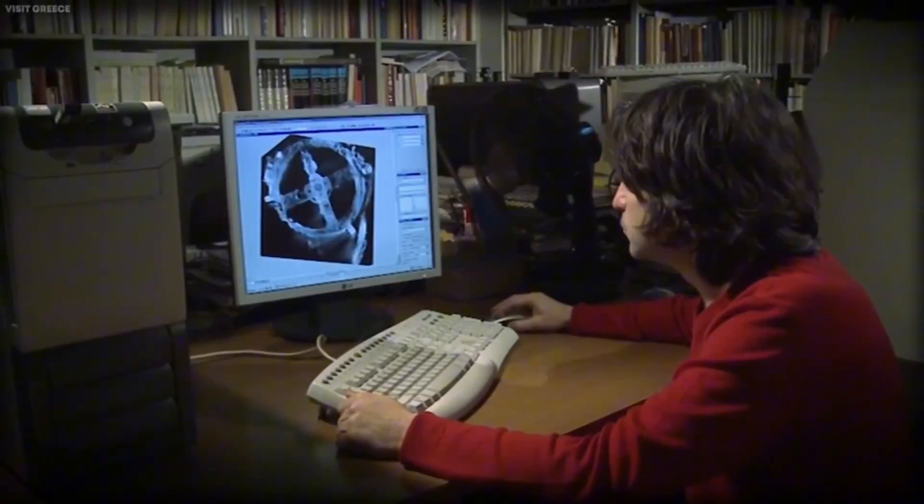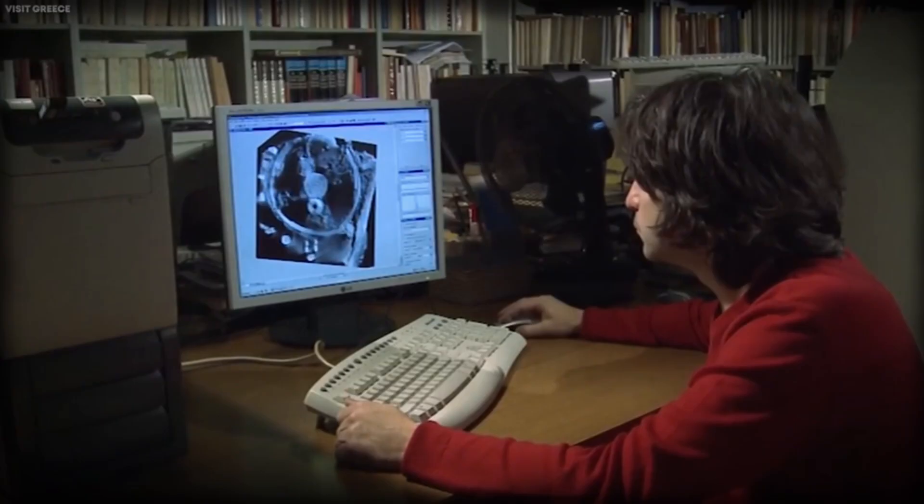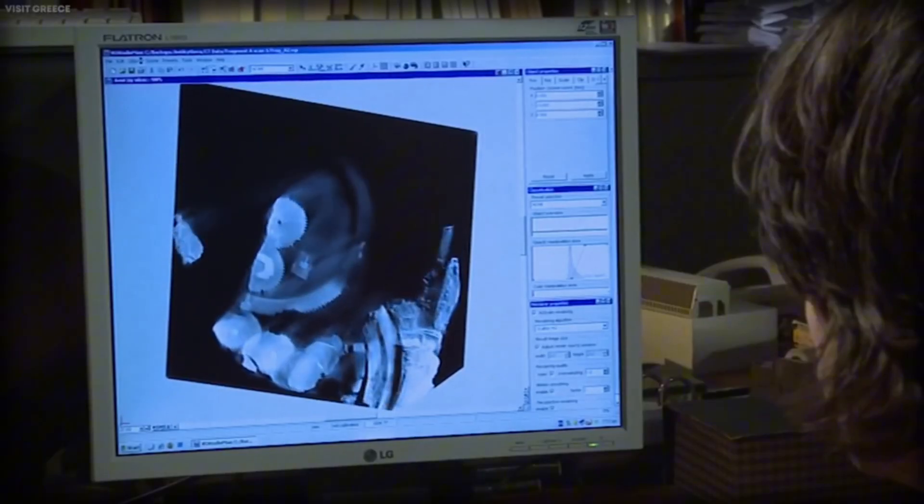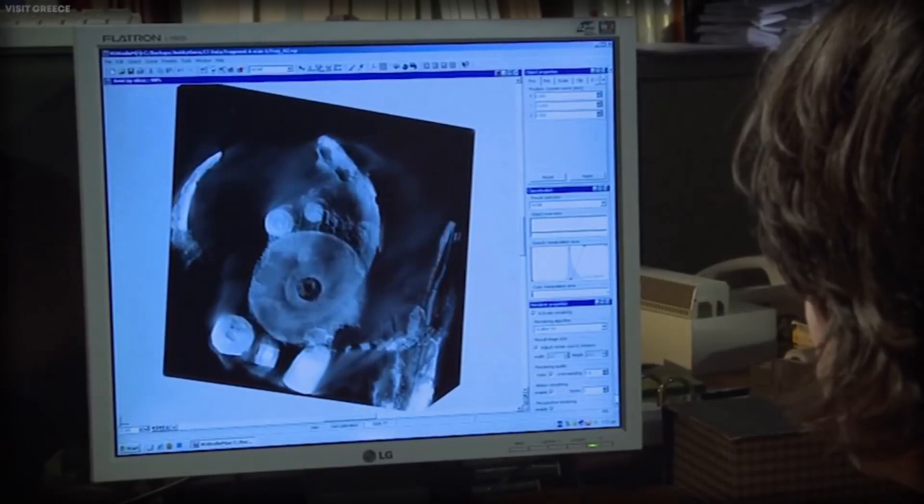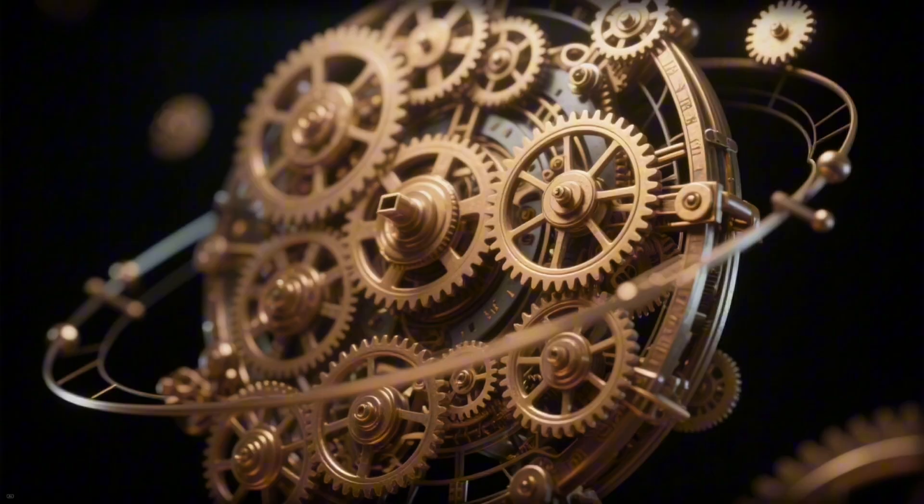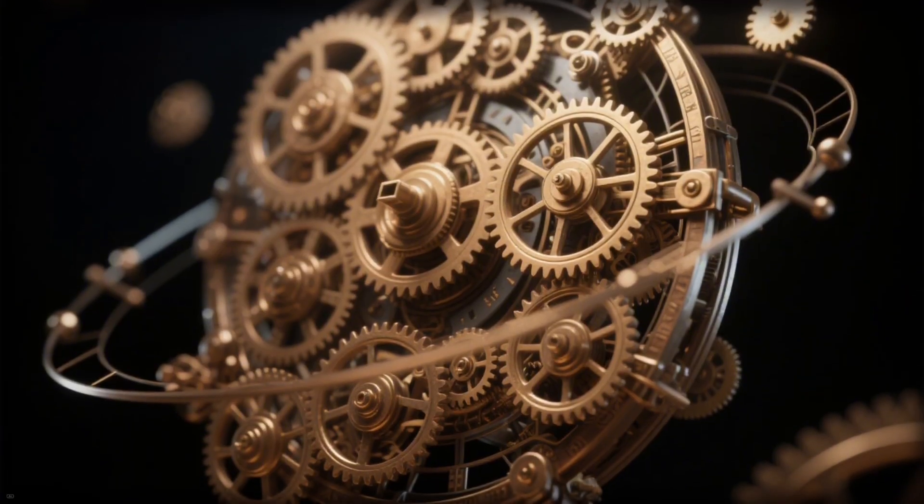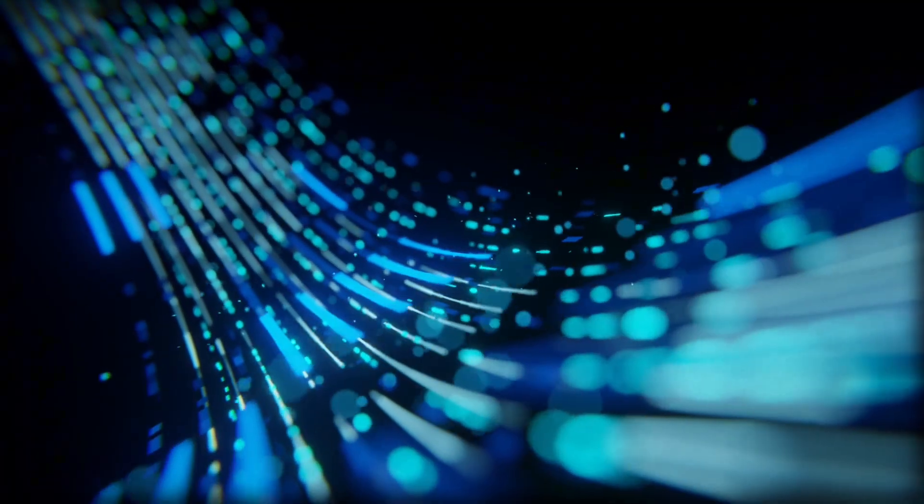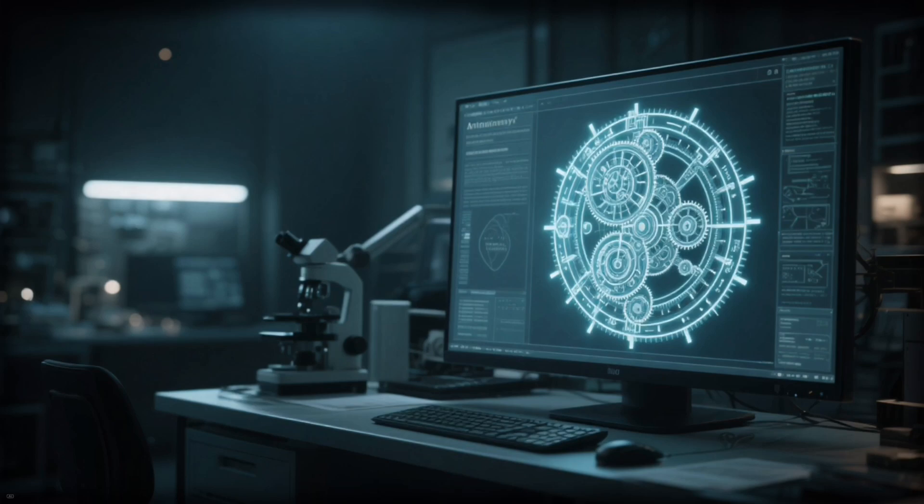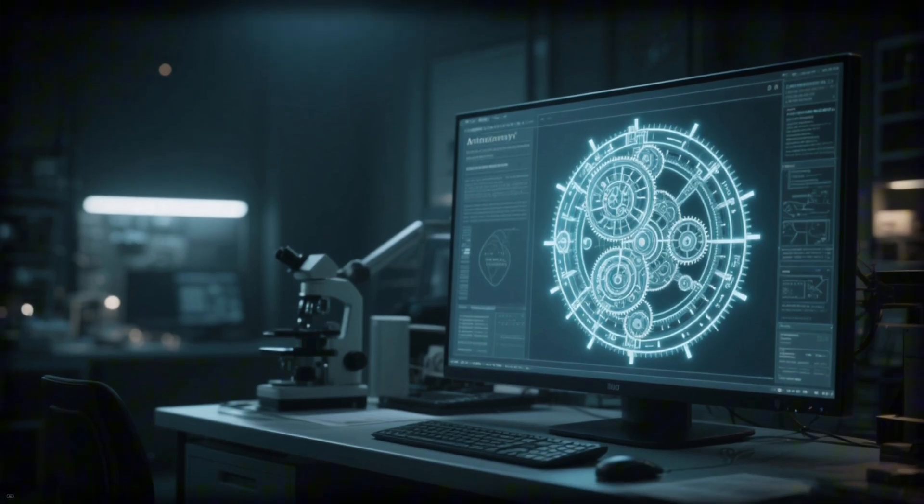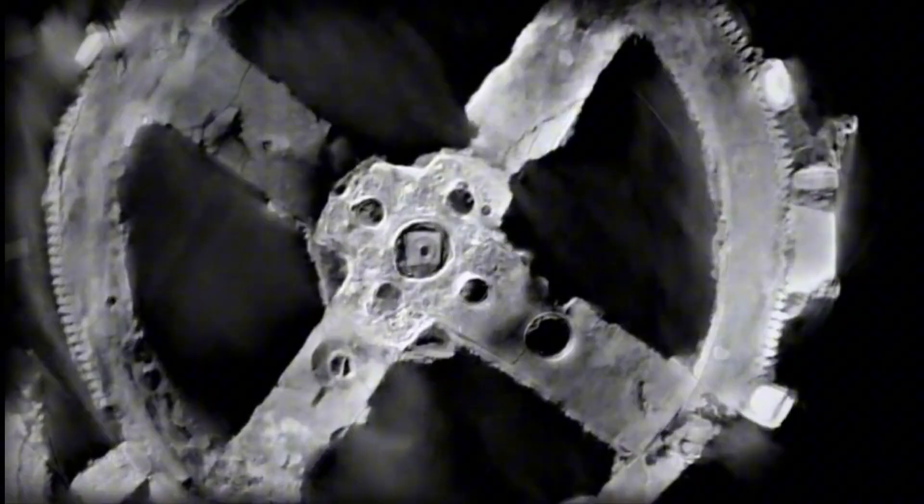What they found defied belief. Inside the corroded shell were multiple layers of gears, each rotating at different speeds, as if it had once calculated cycles, patterns, or perhaps something celestial. But it would take another 30 years and new technology before the machine would finally speak again. Because hidden within that bronze ruin was something far greater than a tool or a toy. It was the mind of an ancient engineer trying to model the cosmos itself.